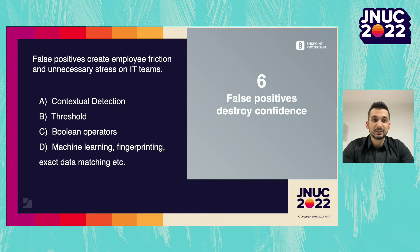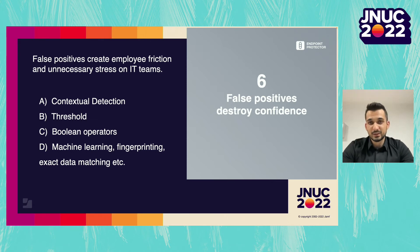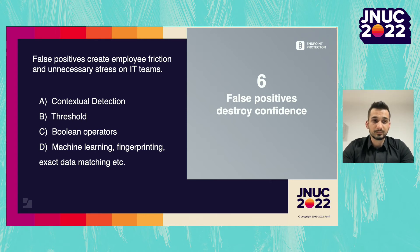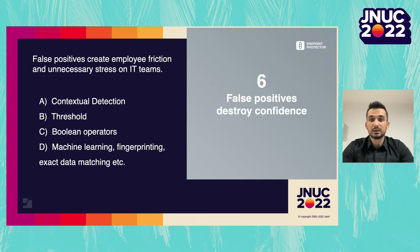False positives — the worst nightmare of every DLP analyst. How do you determine if an incident is really cause for concern or just another false positive? The ugly truth is that DLP solutions have false positives — all of them, without exception. The best thing you can do is minimize and reduce false positives as much as possible. Contextual detection rules allow you to add context to the sensitive data you are protecting. For example, if you want to prevent social security numbers from leaving the organization, also look for keywords in proximity of those numbers — like 'social security,' 'SSN,' and so on. This way, not every nine-digit number will be flagged.